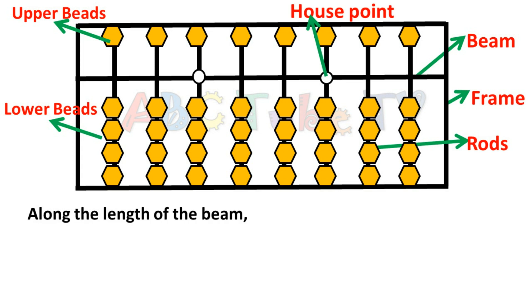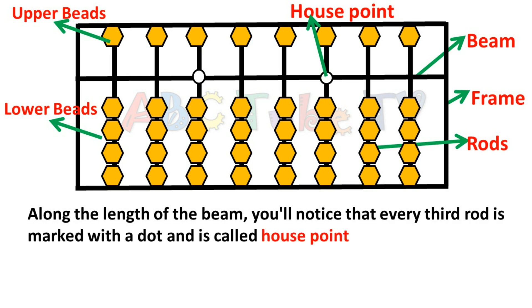Along the length of the beam, you will notice that every third bead is marked with a dot and is called house point. These especially marked rods are called unit rods.